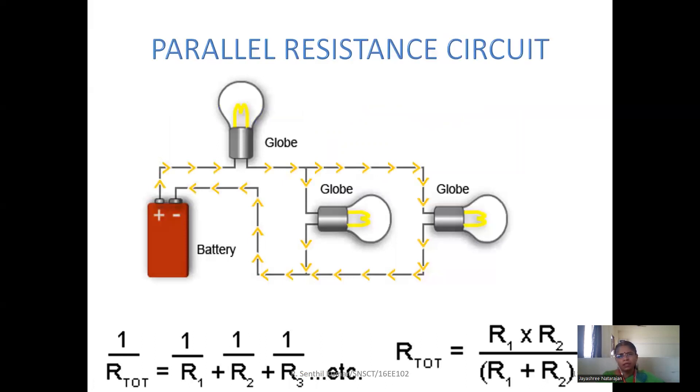The second one is resistance connected in parallel. Here the formula is 1 by R total equals 1 by R1 plus 1 by R2. That is the sum of reciprocals of the resistances connected in the circuit. So that is the equivalent resistance of a parallel circuit.